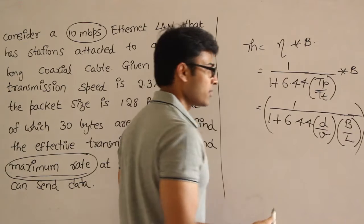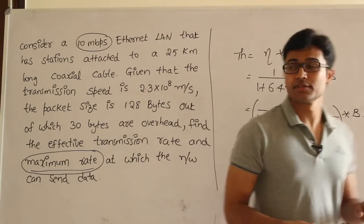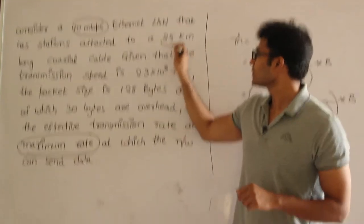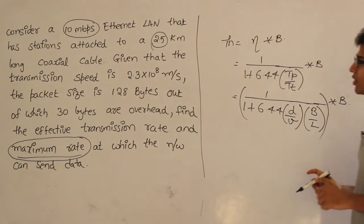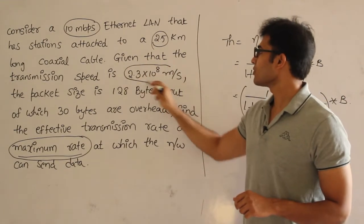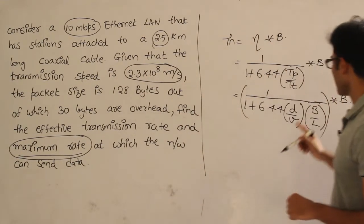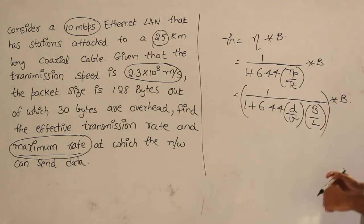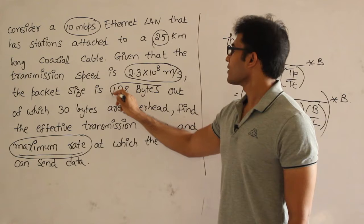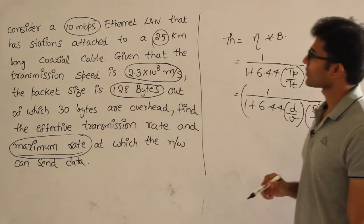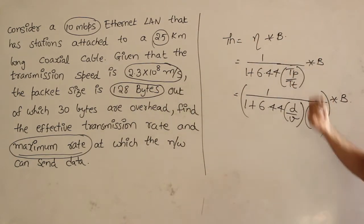Let's check if all parameters are given. Distance: 2.5 kilometers, given. Velocity: 2.3 × 10^8 meters per second, given. Bandwidth: 10 Mbps, already given. Length of the packet: 128 bytes, given. Therefore, using all this we can find out the throughput.